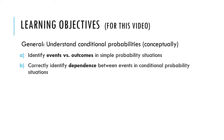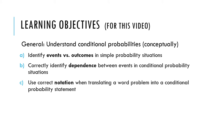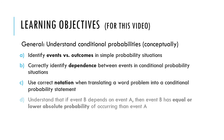Identify dependence between events in conditional probability situations. Conditional probability always has some events dependent on other events, so try to identify which event is dependent on which other event. Also, use correct notation when translating a word problem into a conditional probability statement. This is part of the skill set of analytical problem solving and quantitative reasoning — being able to break a word problem down into symbols so you can say, 'Ah, it's this kind of problem, now I know how to approach it.'